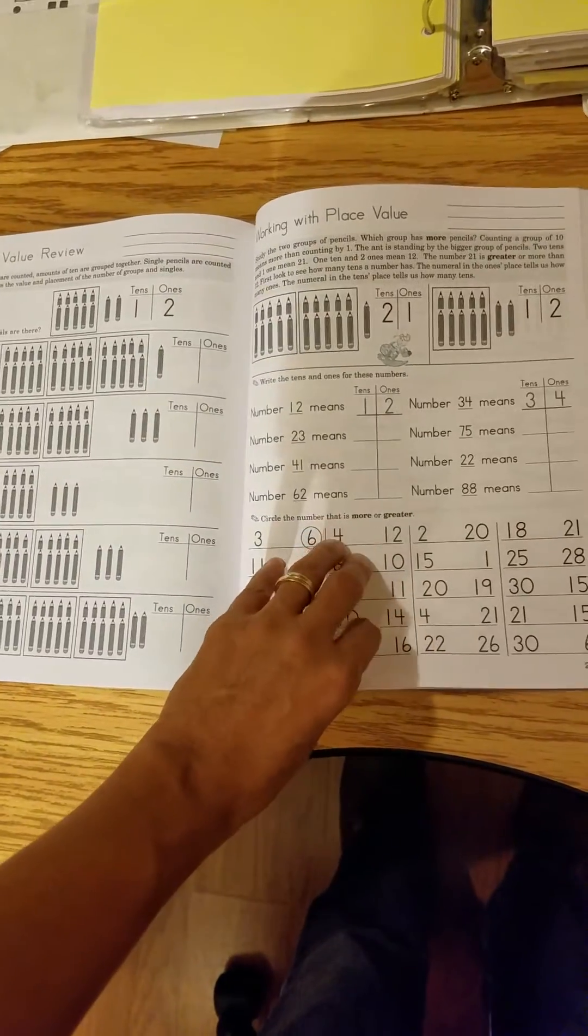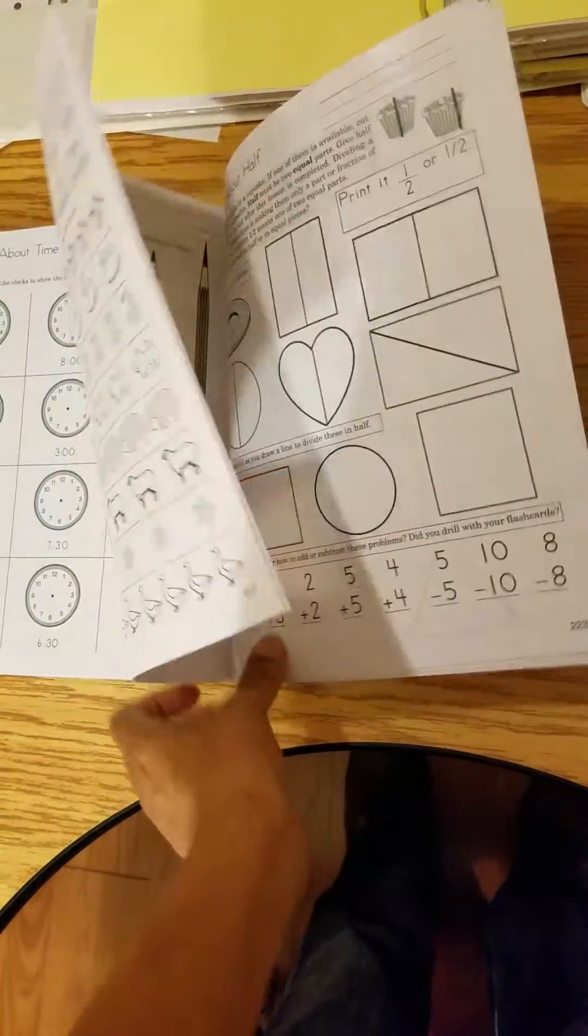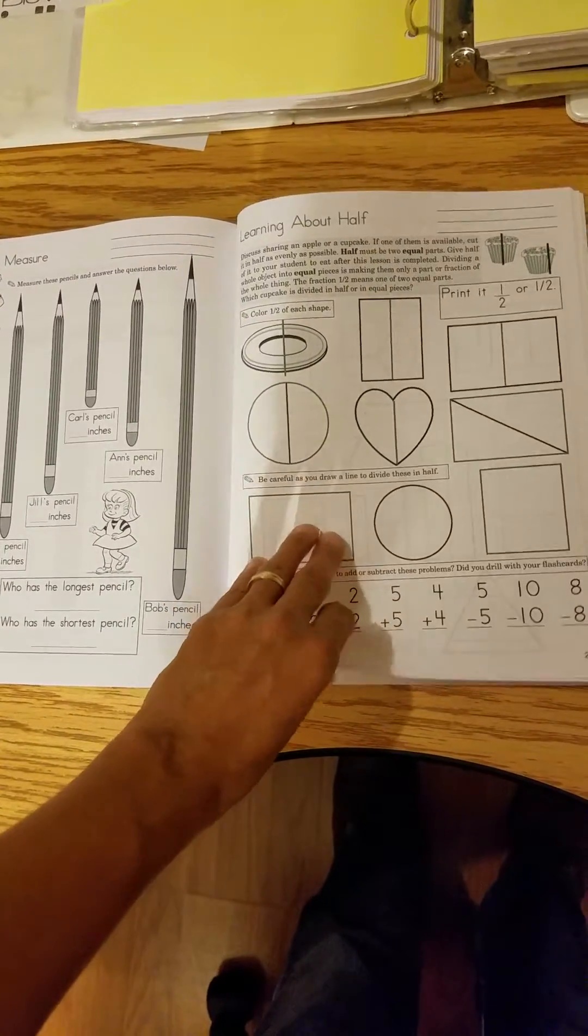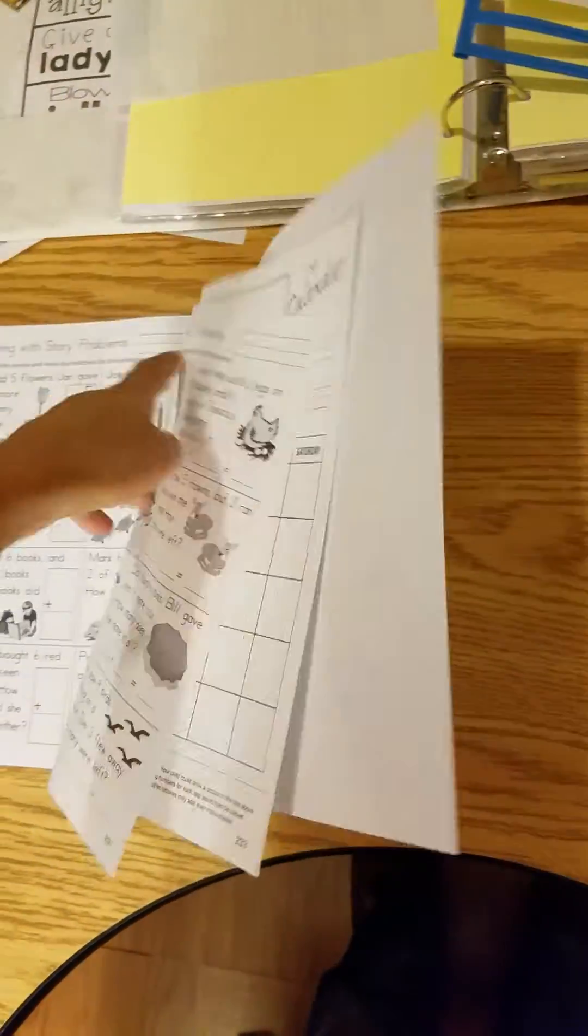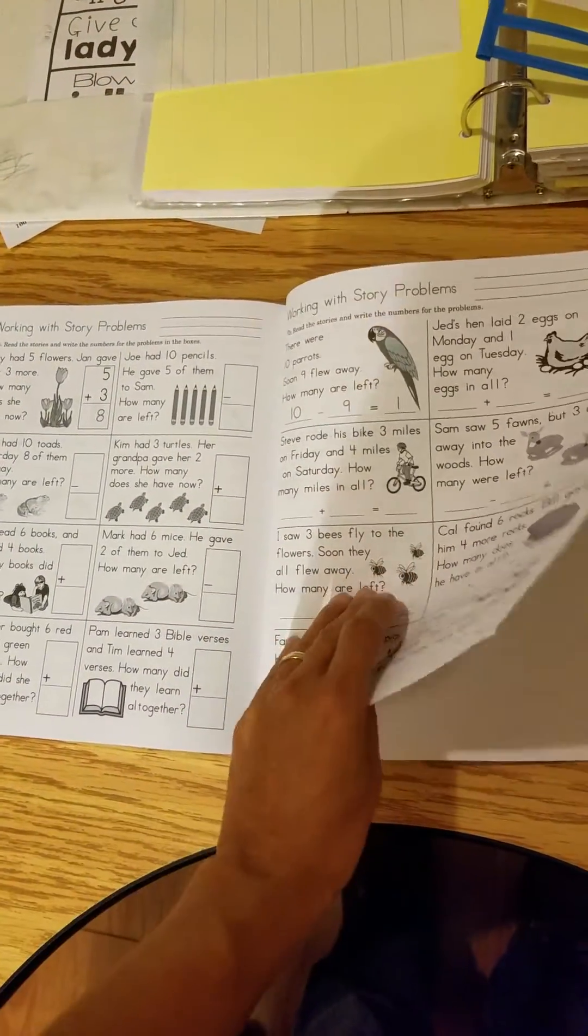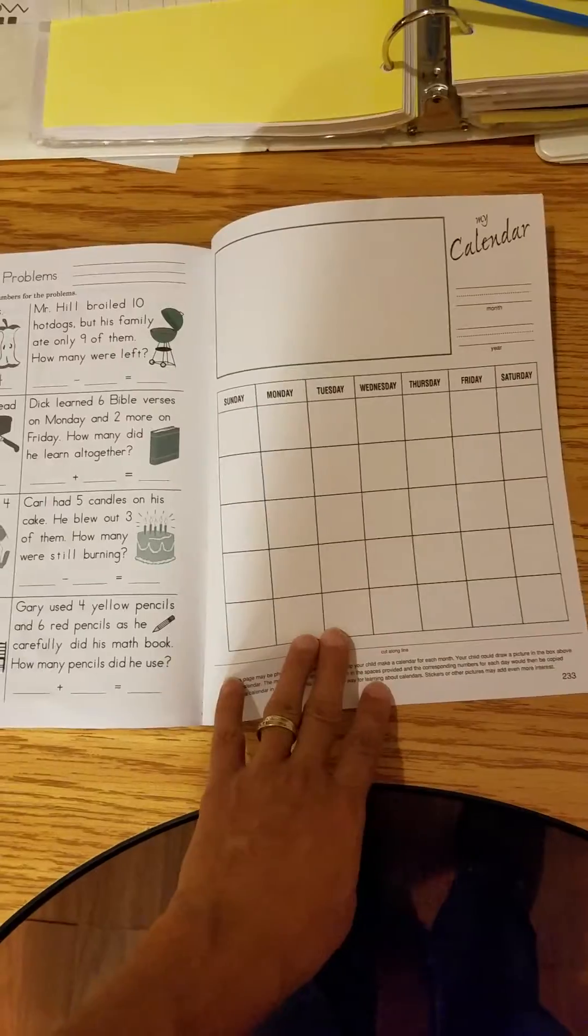Place value, time, ordinal numbers, measurements, story problems. Let's see what's the last page here. Story problems and a calendar. Okay, now let me go on to Level A, which is their first grade.